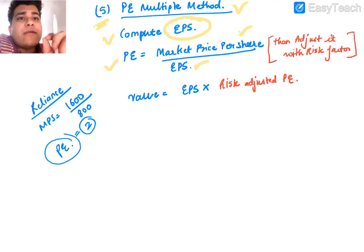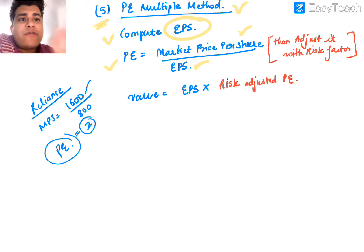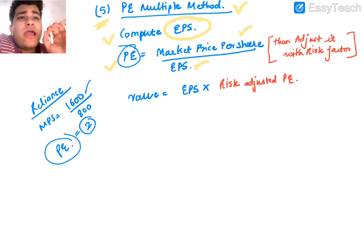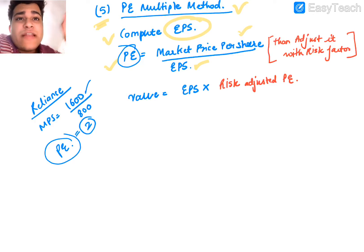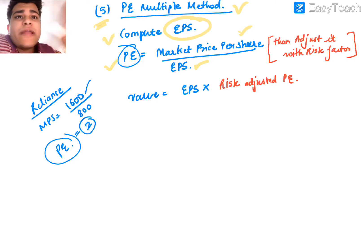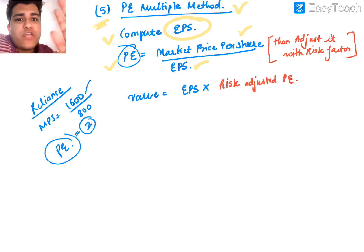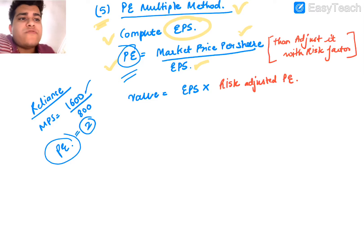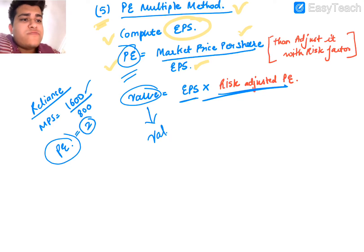PE ratio tells us how many years of earnings are needed to cover the market price. We then adjust the PE based on the risk factor of that industry and company. For example, Amazon facing litigation from the Trump government about selling conflicting items is a risk factor specific to Amazon, not the entire market. Adjusted PE multiplied by EPS gives us the theoretical value per share, which we then compare with the market price.